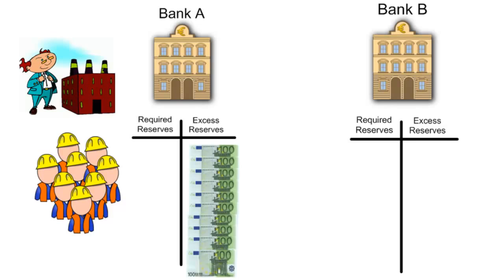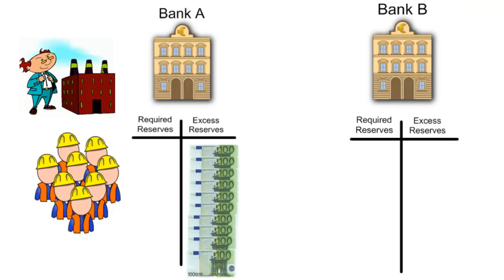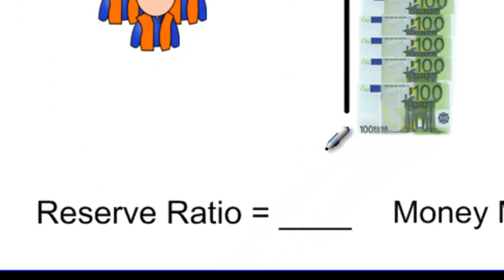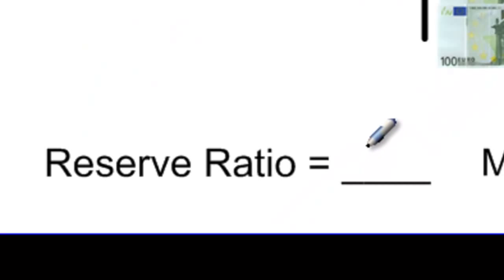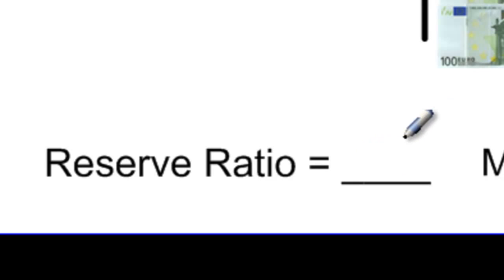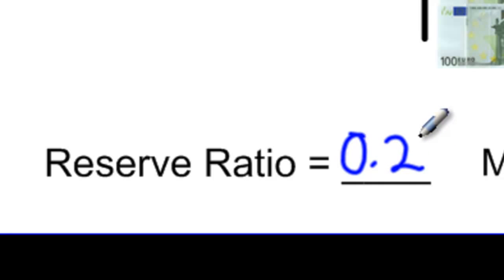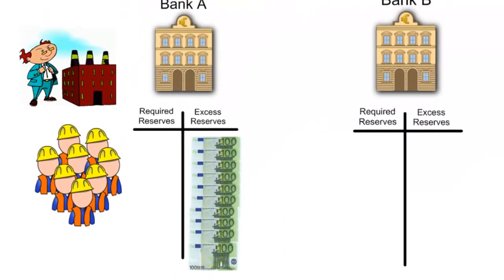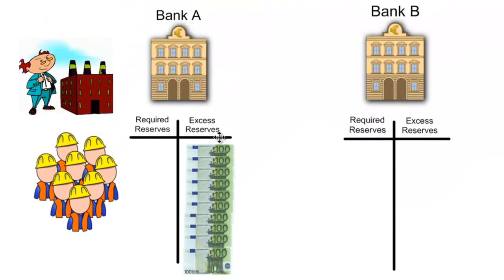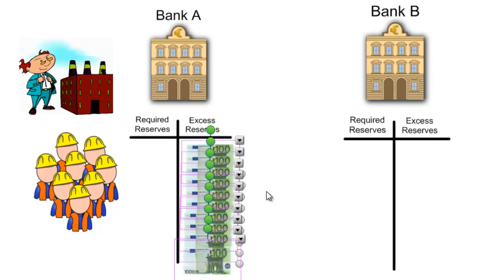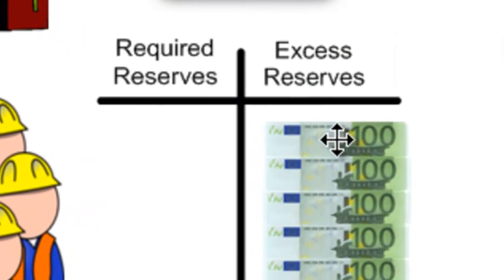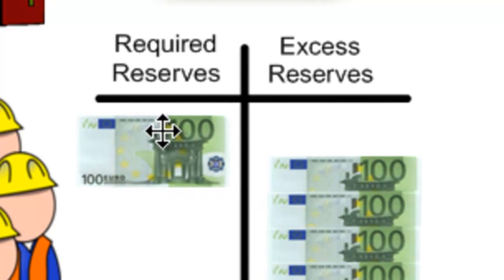We have to ask: what is the reserve requirement in this economy? Of this 1,000 euros, how much is required to be put into reserve? Let's assume that the ECB — the European Central Bank — has set a reserve ratio of 0.2. This means that 20% of all commercial banks' deposits must be kept in reserve at the European Central Bank. So of the 1,000 euros deposited from the workers' earnings, 200 euros must be kept on reserve at the bank.